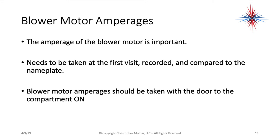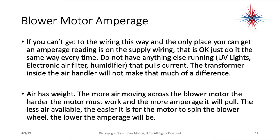Blower motor amperages are affected as well, and that's why we need to know them. The amperage of the blower motor should be taken at the first visit, recorded, and compared to the nameplate. Blower motor amperages should be taken with the door to the compartment on — taking it off does not give you the correct running amperage. If you can only access supply wiring, take the reading there consistently. Make sure nothing else is running — UV lights, electronic air filters, or humidifiers that pull current. Air has weight: the more air moving across the blower motor, the harder the motor must work and the more amperage it pulls. The less air available, the easier it is for the motor to spin and the lower the amperage will be.